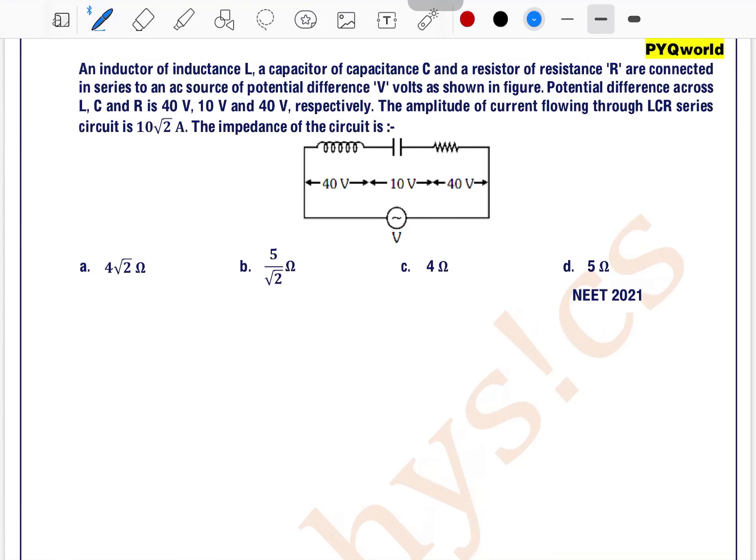An inductor of inductance L, a capacitor of capacitance C and resistor of resistance R are connected in series to an AC source of potential difference V as shown in the figure. Potential difference across L, C and R is 40V, 10V and 40V respectively. The amplitude of current flowing through the LCR circuit is 10√2A. The impedance of the circuit is,